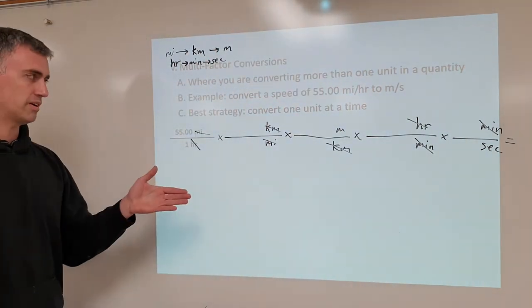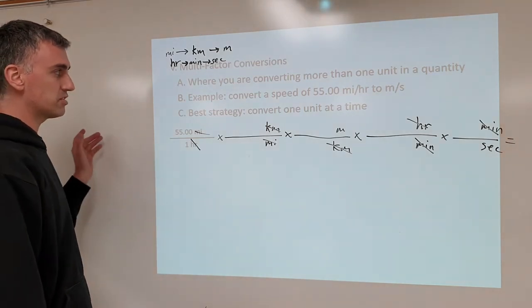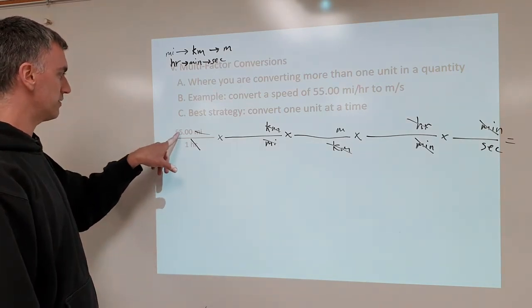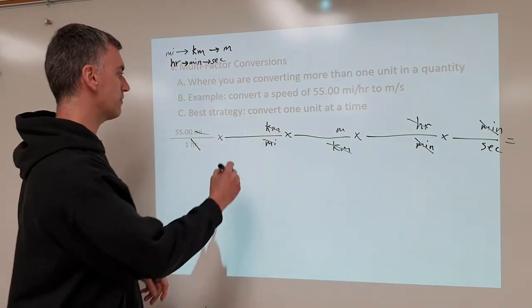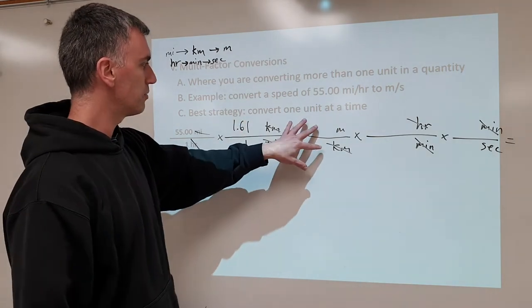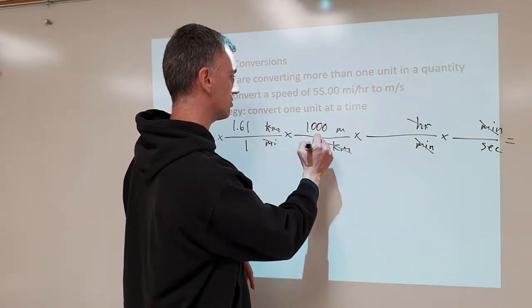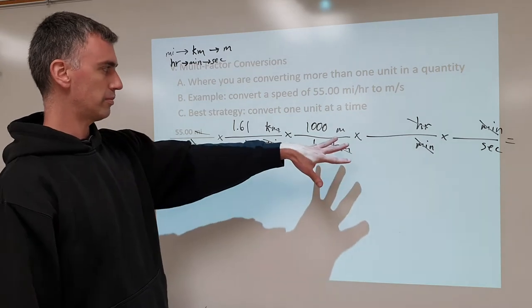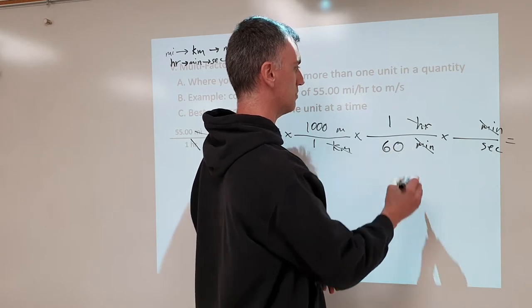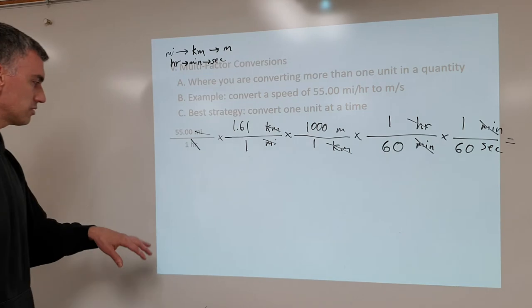So what that means is on a reference sheet, it does tell you how many miles are in a kilometer or how many kilometers are in a mile. So you convert miles to kilometers. And then you convert a kilometer to a meter. So what we do is we put miles on bottom so it can cancel as we go from miles to kilometers.